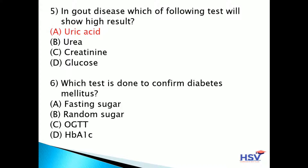Sixth question: which test is done to confirm diabetes mellitus? Option A: fasting sugar. Option B: random sugar. Option C: OGTT. Option D: HbA1c. The answer is option C — OGTT confirms diabetes mellitus. OGTT stands for oral glucose tolerance test.